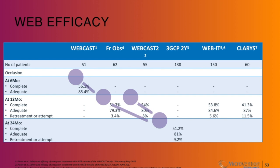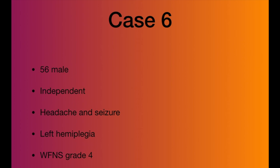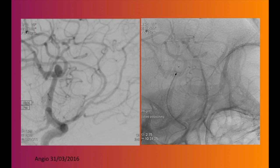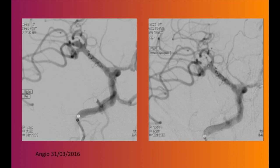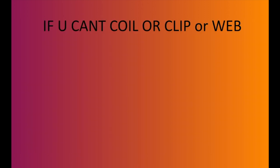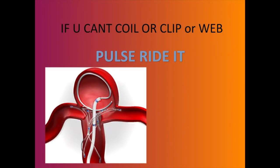Here is a young grade four subarachnoid hemorrhage patient with an MCA aneurysm — the surgeon wanted to remove a hematoma. You want to treat this aneurysm quickly and get a good result: just go in, drop a WEB, close the aneurysm, and the patient can proceed to hematoma removal. The follow-up looks extremely good.